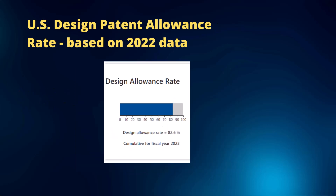Lastly, here's data from the USPTO showing the allowance rate for U.S. design patent applications. The most recent data through the end of 2022 shows the allowance rate is currently 82.6%. That means out of all U.S. design patent applications filed in 2022, 82% of them were allowed — an extremely high percentage compared to the allowance rate for U.S. utility patent applications. This data suggests it's generally easier to obtain a U.S. design patent versus a U.S. utility patent.